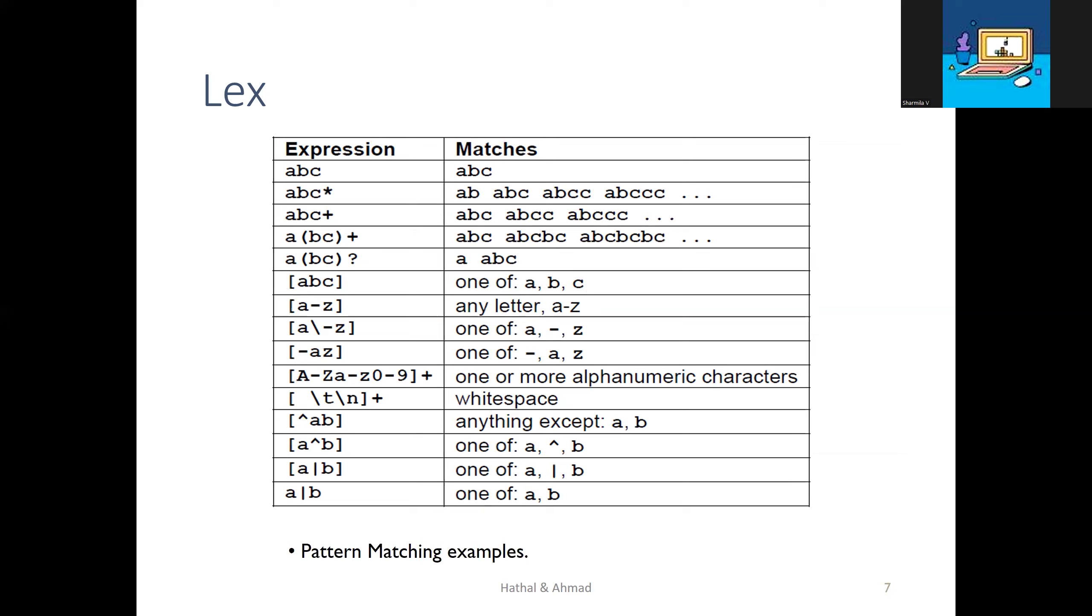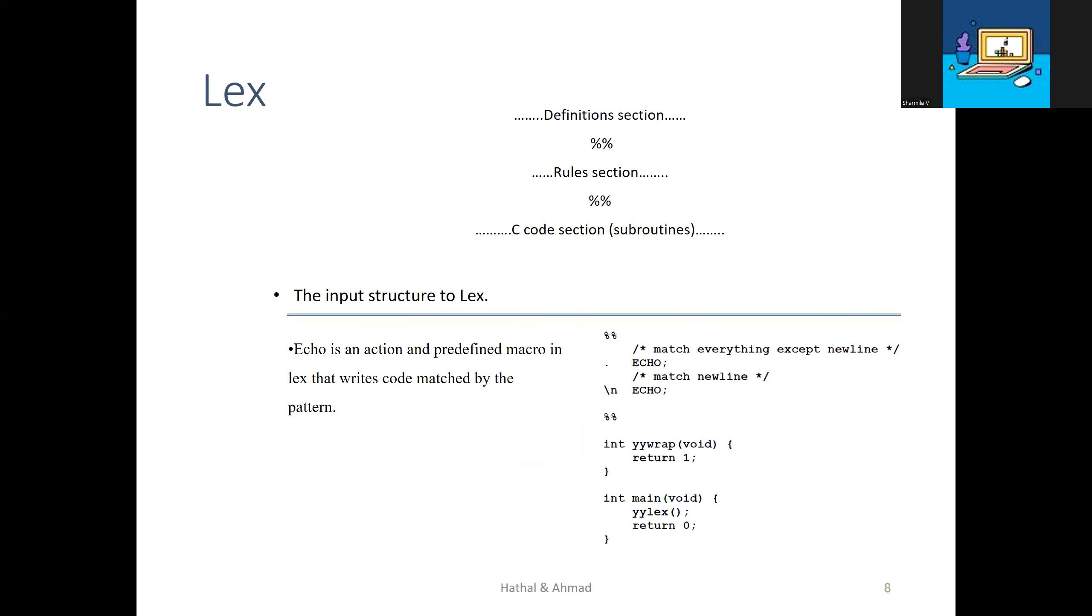Pattern matching examples: if it's abc*, then 'ab' is compulsory. You write 'ab' followed by epsilon transition (zero c's) or one c, two c's, three c's, n times c. If it's c+, then one or more c's is mandatory - epsilon is not possible. Examples: abc, abcc, abccc, and so on with n number of c's.